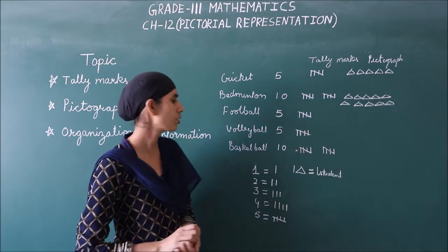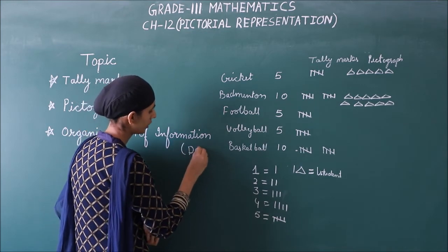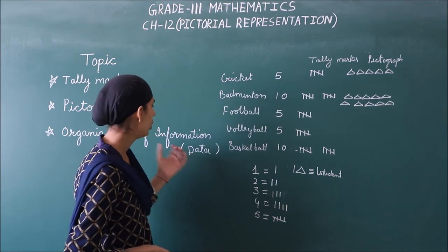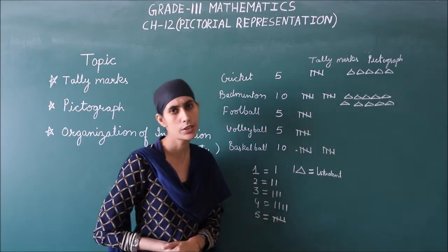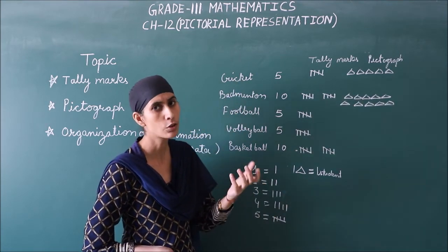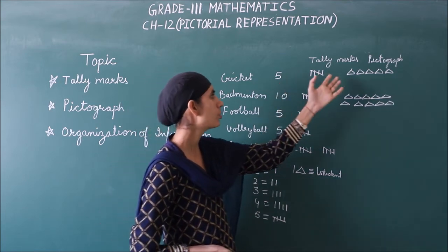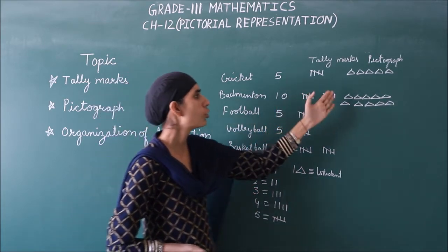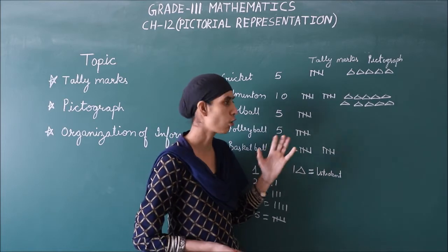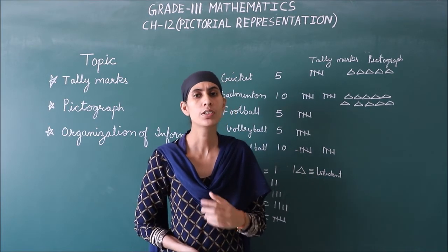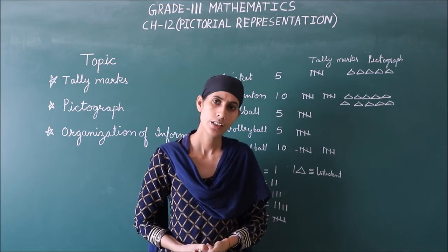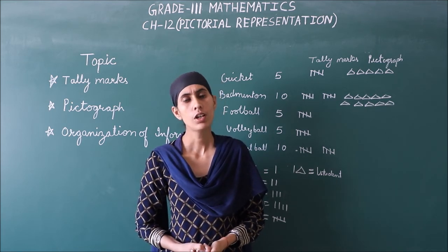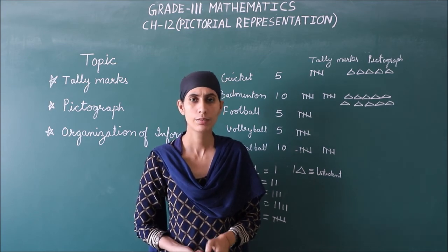So, organization of information — another word for this is 'data.' This means we had some information and we organized it and represented it. We have two ways to do this: tally marks and pictograph. In this chapter, we will study both of these topics — how to draw them and how to answer questions based on drawn representations. In the next video, I will explain Exercise 12.1. Till then, bye bye!